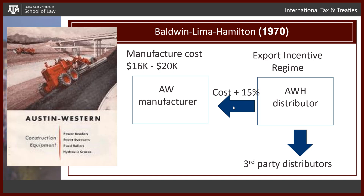In our Baldwin case from 1970, we have Austin Western — that's the subsidiary of Baldwin-Lima-Hamilton. Austin Western makes big equipment. That's AW in the United States. You have AWH, which is the foreign company. This involves Puerto Rican cases. The United States Congress set up an export incentive regime. WH stands for Western Hemisphere — if an American company established a subsidiary in a Western Hemisphere country like Puerto Rico, they wanted to build up the economy of Puerto Rico, and if an American company did that, you would have a reduction in your taxes.